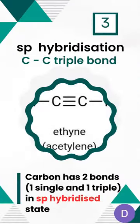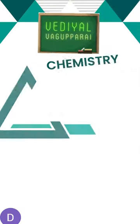Number 3: SP hybridization. A carbon-carbon triple bond has two bonds — one single bond and one triple bond.